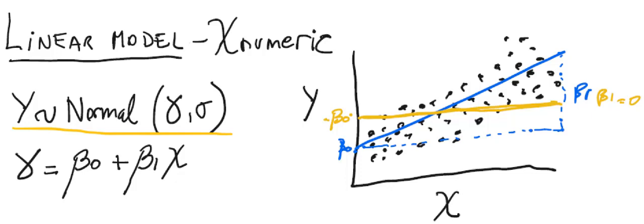And we know that in a normal distribution we need to specify two parameters. One is the mean and the other one is the standard deviation. So the mean is going to be gamma and the standard deviation is sigma.